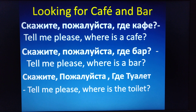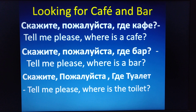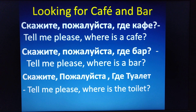Now let us have a look at going to a cafe or bar. The very first question from our side can be: tell me please, where is the cafe? Iskazhi che pajalusta gizhe kaaphe? Next question could be: Iskazhi che pajalusta gizhe baar? If we wish to go to the bar — in Russian also they call it bar. Gizhe means where. For toilet: Iskazhi che pajalusta gizhe tualet — tell me please, where is the toilet?